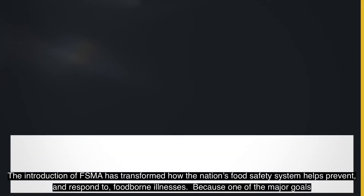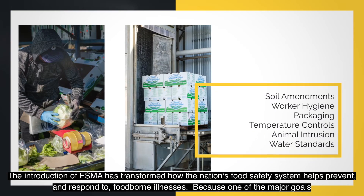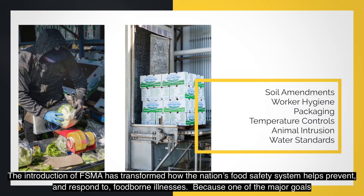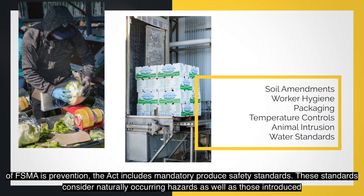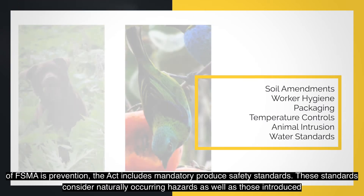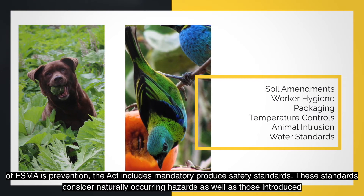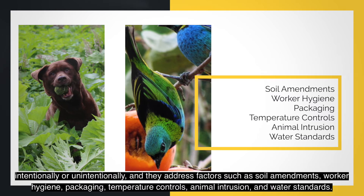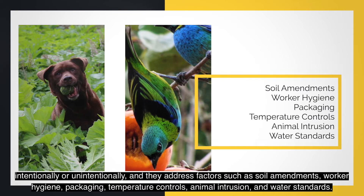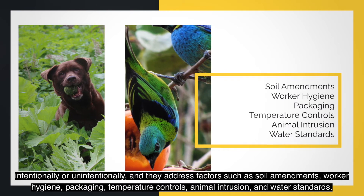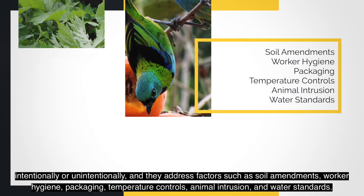The introduction of FSMA has transformed how the nation's food safety system helps prevent and respond to foodborne illnesses. Because one of the major goals of FSMA is prevention, the Act includes mandatory produce safety standards. These standards consider naturally occurring hazards as well as those introduced intentionally or unintentionally, and they address factors such as soil amendments, worker hygiene, packaging, temperature controls, animal intrusion, and water standards.